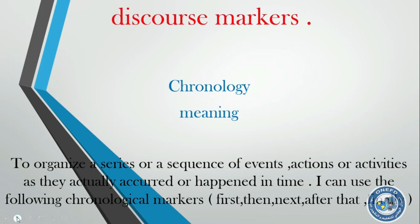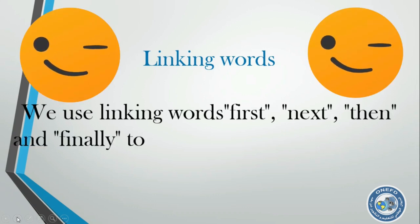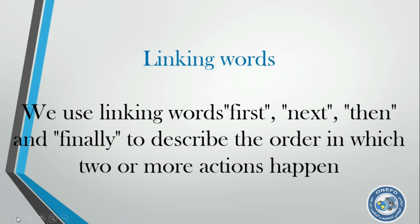The linking words — or let's say chronological markers — both of them are correct. So let's see the meaning of linking words. We use linking words: first, next, then, and finally, to describe the order in which two or more actions happen. We use these linking words in order to link actions together. Not only actions — also we can link words so they can be in a chronological order. Now, for more explanations, for more examples, let's see this.